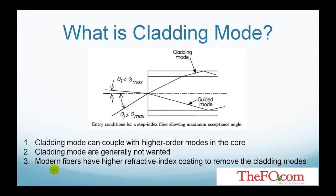Modern fibers have a polymer coating layer with a refractive index that is slightly higher than that of the cladding, so that cladding modes are rapidly attenuated and disappear after only a few centimeters. This is particularly true for single-mode fibers.